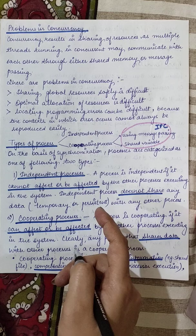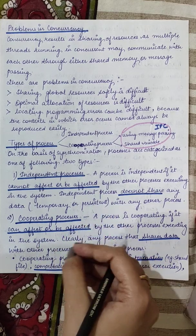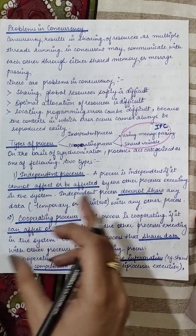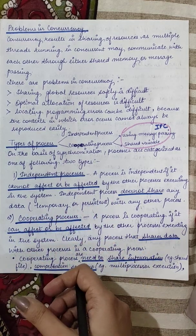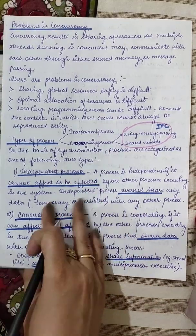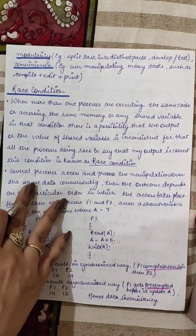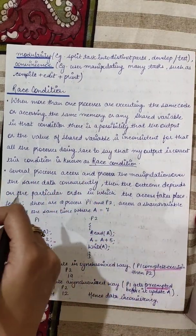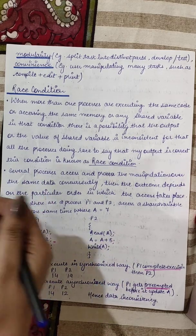Cooperating processes woh processes jo dusre process affect bhi hote hai aur unhe affect karte bhi hain. Kyunki woh log aapas mein shared data ka, shared resources ka use kar rahe so that is the concept of cooperating processes. Cooperating processes ki need kyun padti hai kyunki hum information share kar sakti hai, computation speed ko badhaya ja sakti hai, modularity achieve kar sakti hai, task ko parts mein break kar lete hai and then execute kiya ja sakti hai.